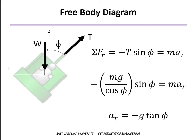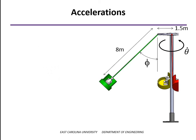So we get that again from the equations of motion. But now if we look at the kinematics of accelerations here, first of all, we'll need to know what the radial distance is out to the center of mass of the seat and rider. And that's going to be that 1½ offset distance, 1½ meters, plus 8 meters times the sine of the angle phi.